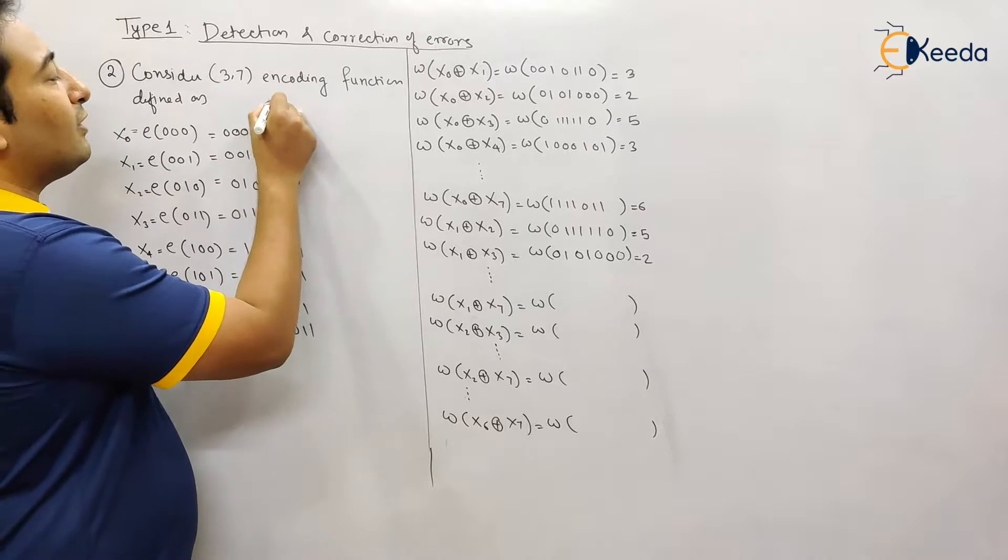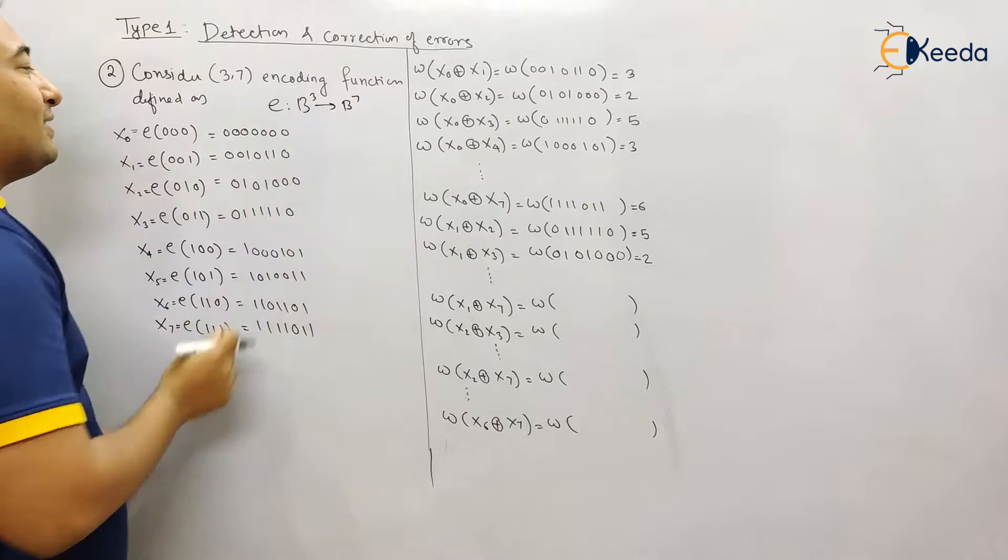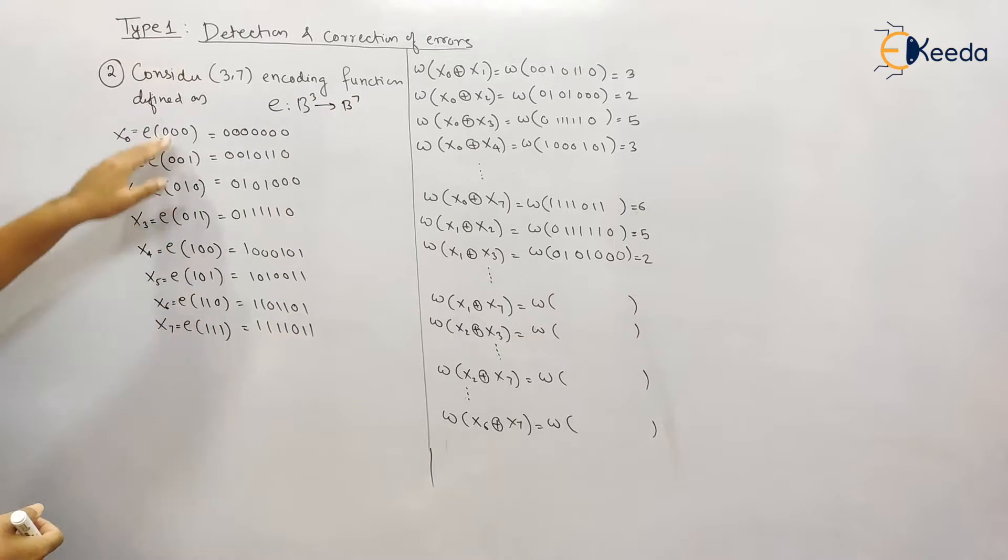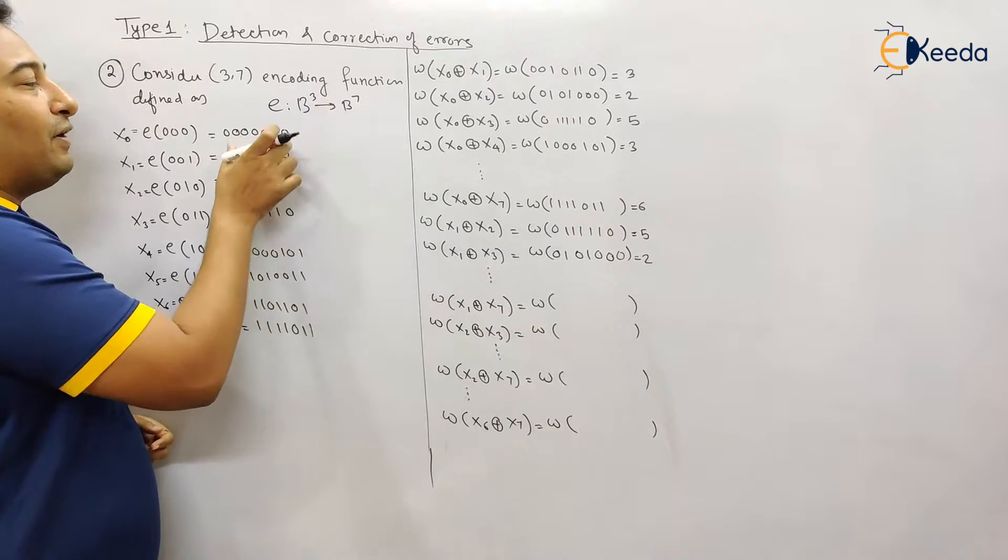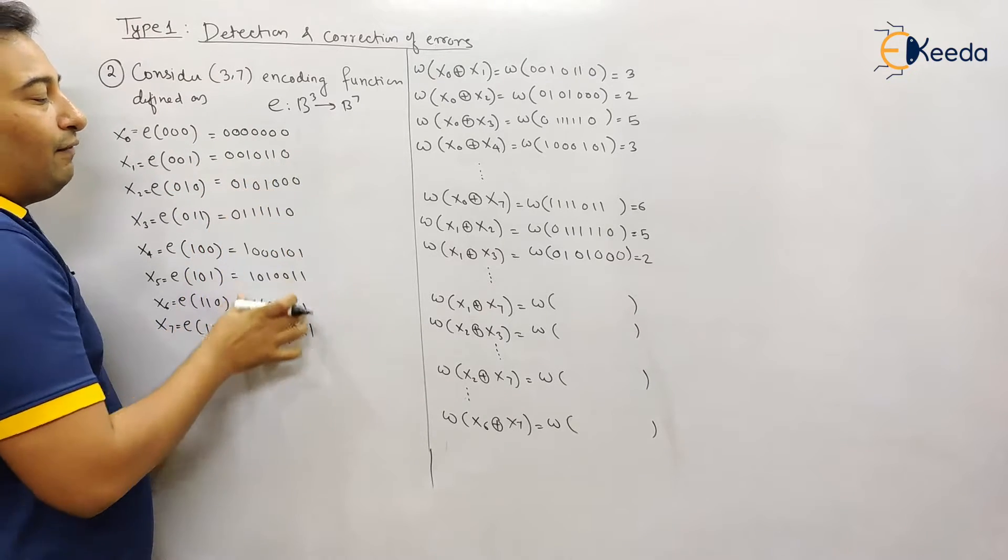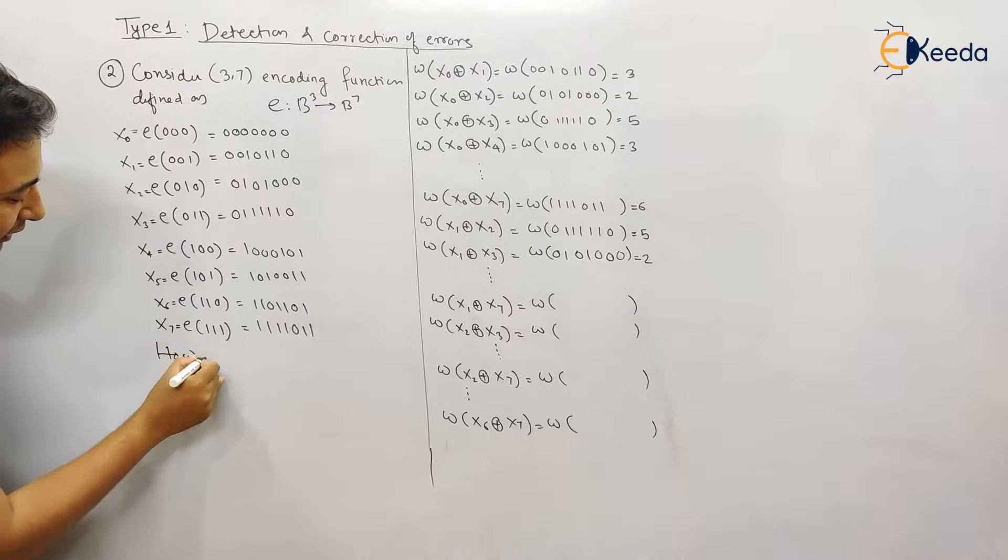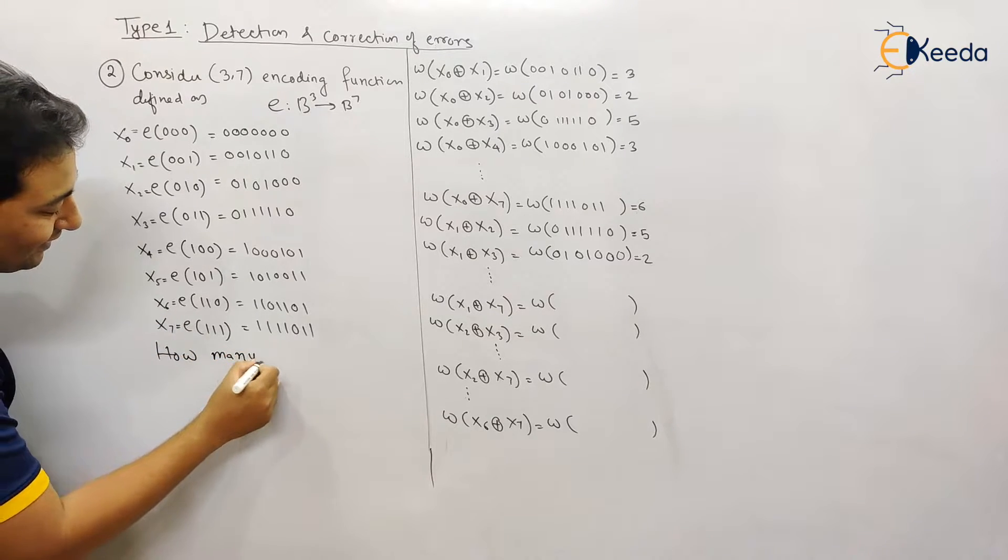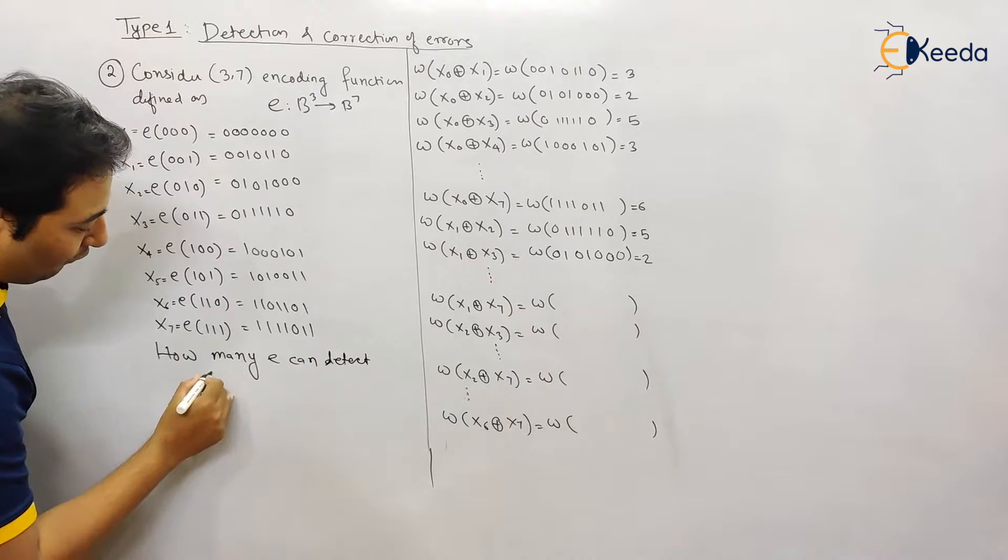On the left hand side, all the codes will be of length 3, starting from triple zero and going up to triple one. On the right hand side, every code is of length seven. The question is the same: how many errors can it detect and how many errors can it correct?